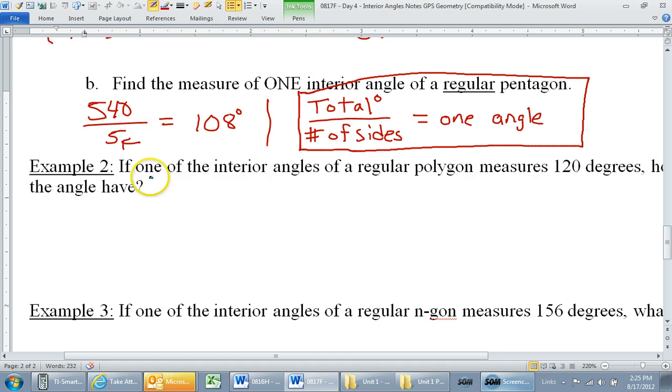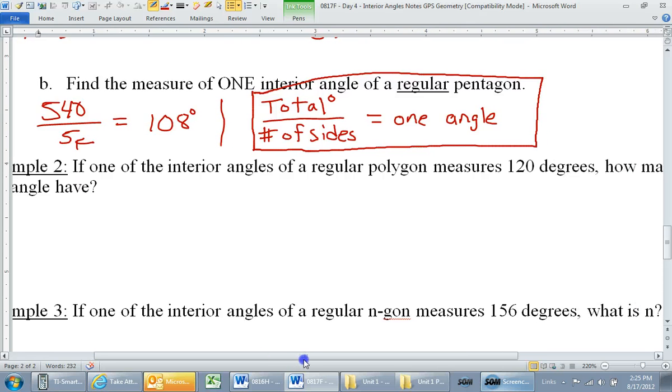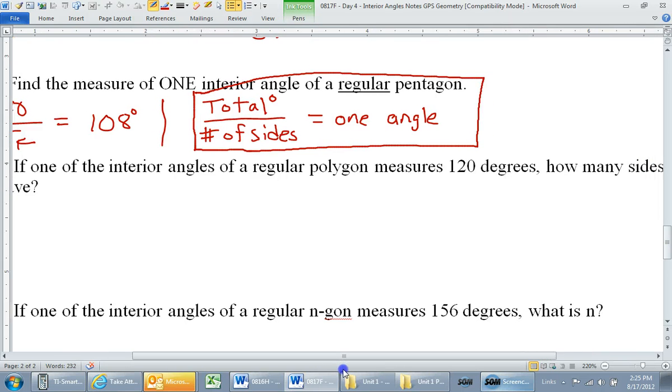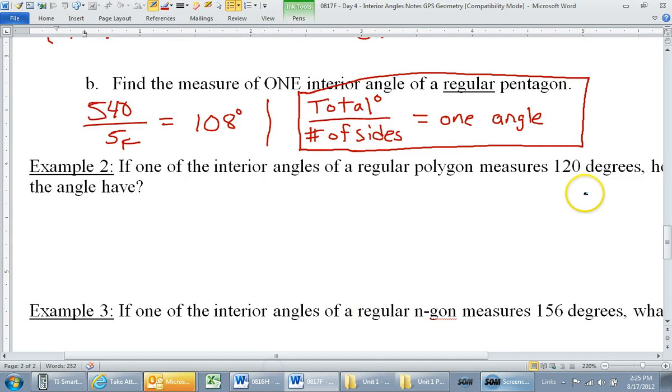Now, look at example two. We're being asked, what are we being given? 120 degrees. If one interior angle of a regular polygon measures 120 degrees, how many sides does the polygon have? So this 120 degrees, what is that? What does it represent? Is it the total degrees in this polygon? No, what is it? It's one of the angles, one of the interior angles.